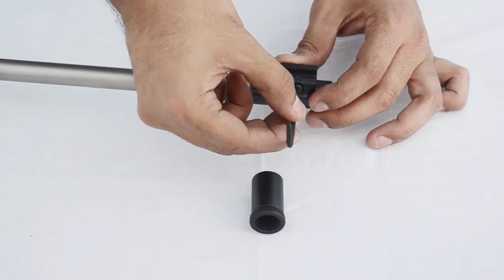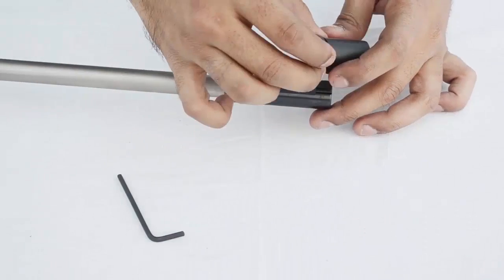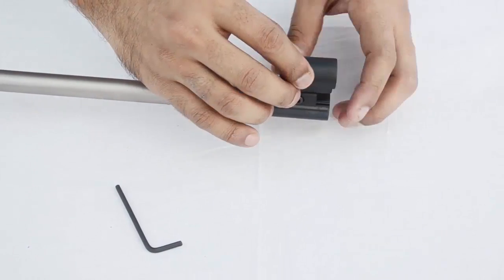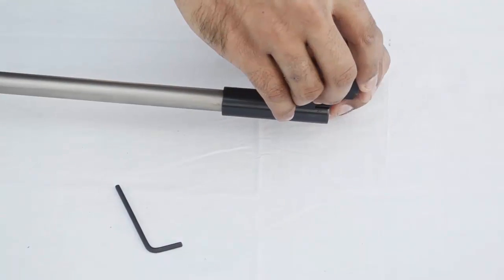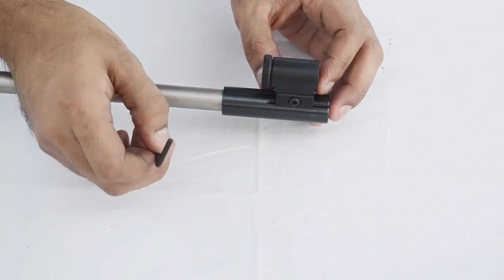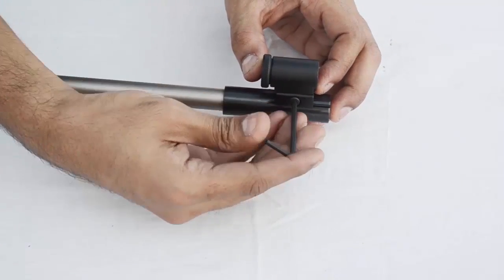Slightly loosen the clamping element and insert the front PeepSight. Adjust the position and then tighten it.